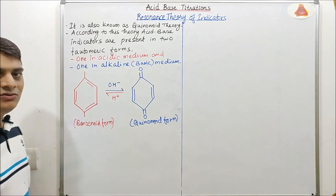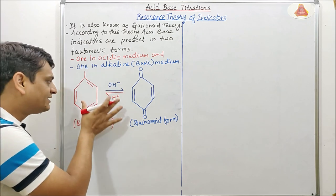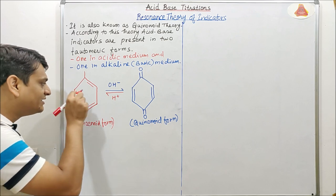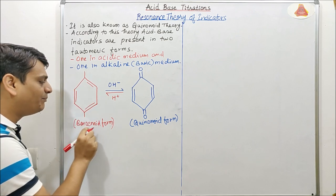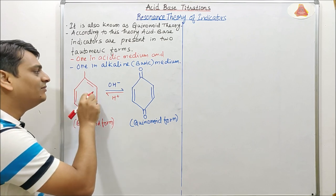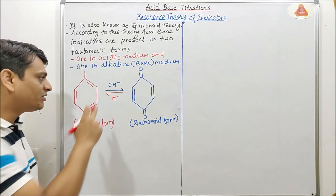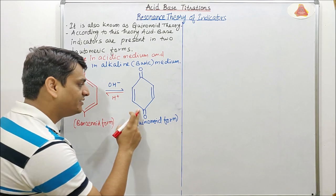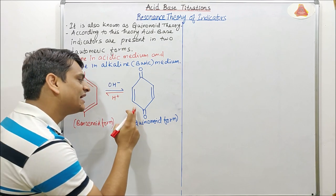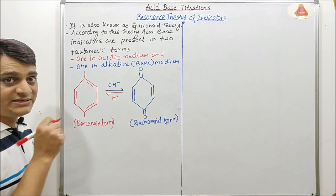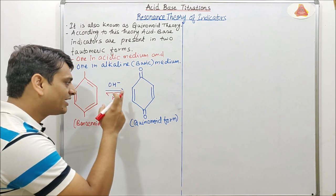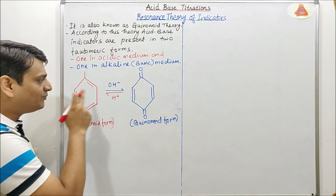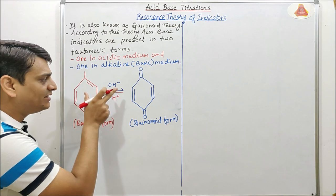So these are the two tautomeric forms of acid-base indicator. In acidic medium it is present in the form of benzenoid. When it is exposed to alkaline medium or OH⁻ ions, it will be converted into the quininoid form. And when this quininoid is exposed to H⁺ ions or acidic medium, it will be converted back to benzenoid. Both structures will be present in equilibrium.